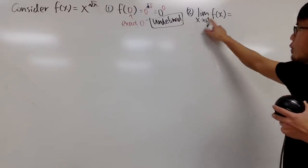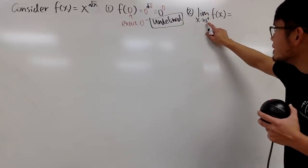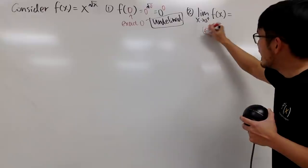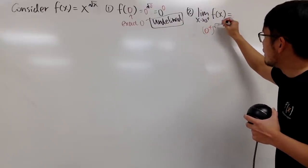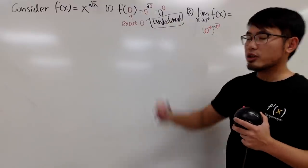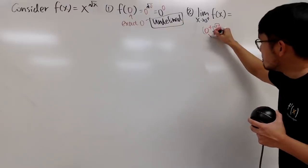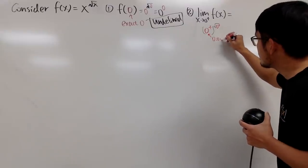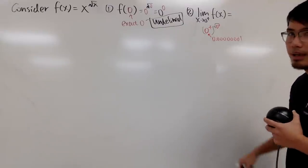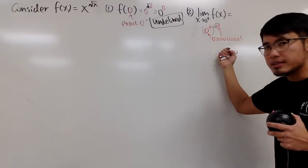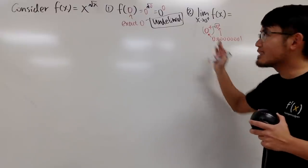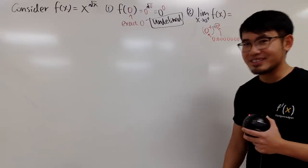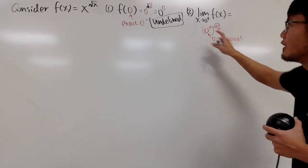When we do this, we plug 0 plus into all the x, and it looks like: 0 plus raised to the square root of 0 plus power. This expression is very different from exact 0 to the 0. You can imagine 0 plus is like a number slightly bigger than 0 — like 0.00000001 — and so is that in the exponent. You are not doing exact 0 to the 0 at all, so you may actually have an answer.